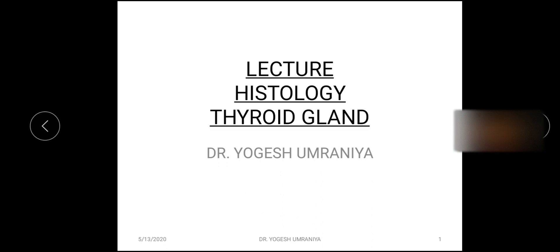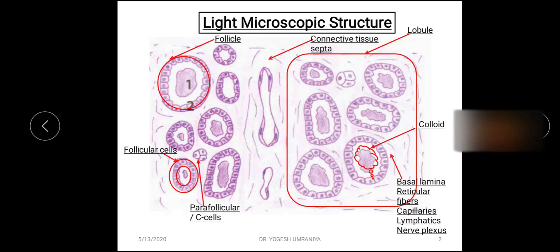Now the microscopic structure. The thyroid gland is covered with a capsule on the most peripheral aspect. From this capsule there is an extension of various connective tissue septa towards the glandular substance. These connective tissue septa divide this gland into various lobules, as you can see here.